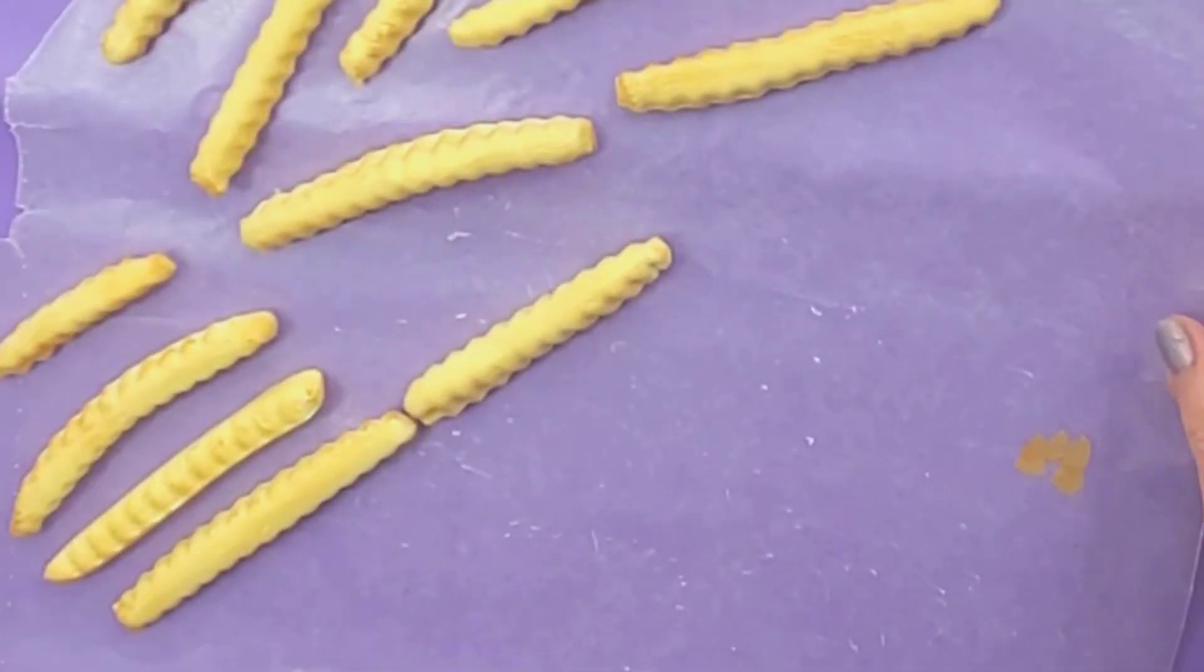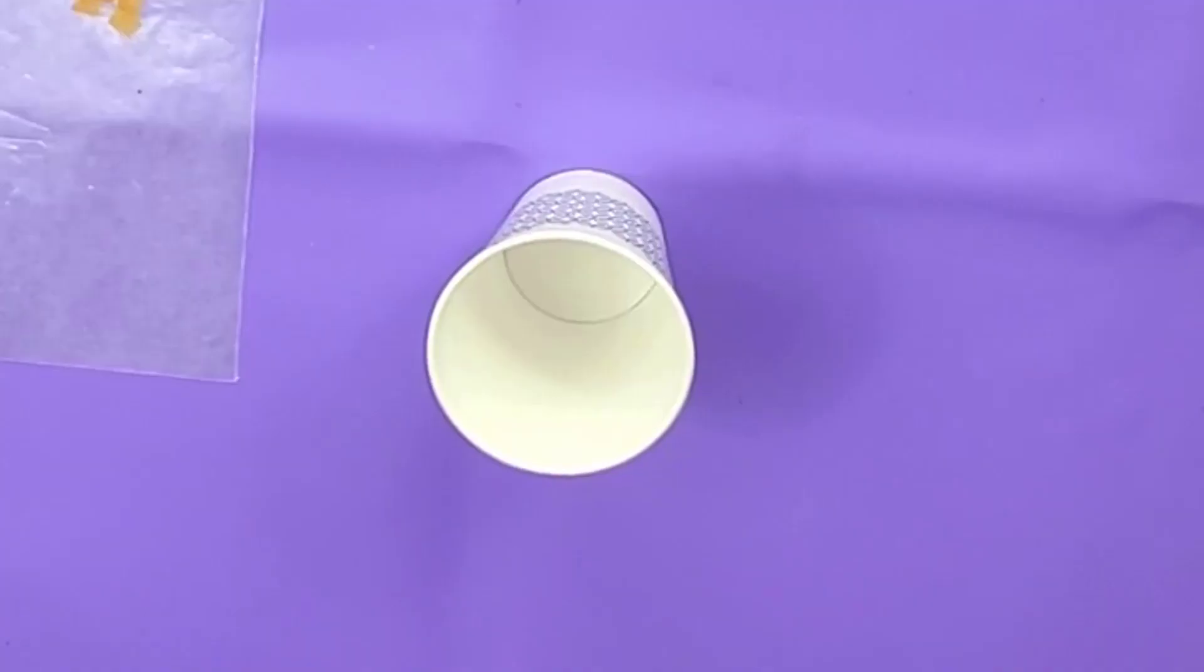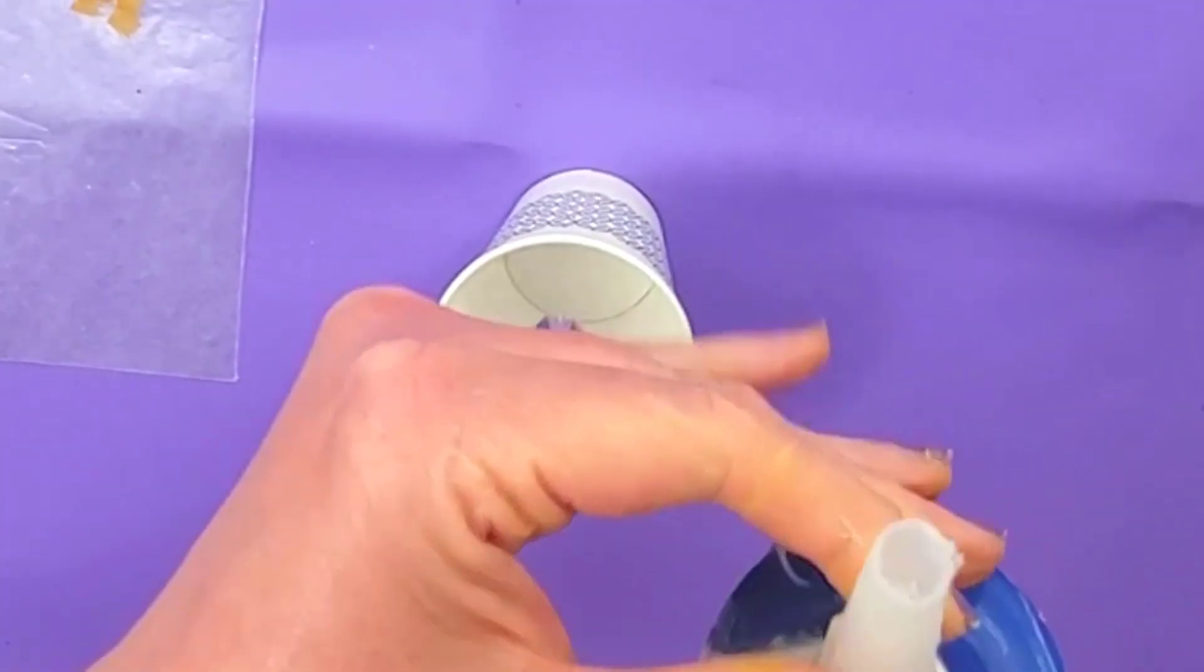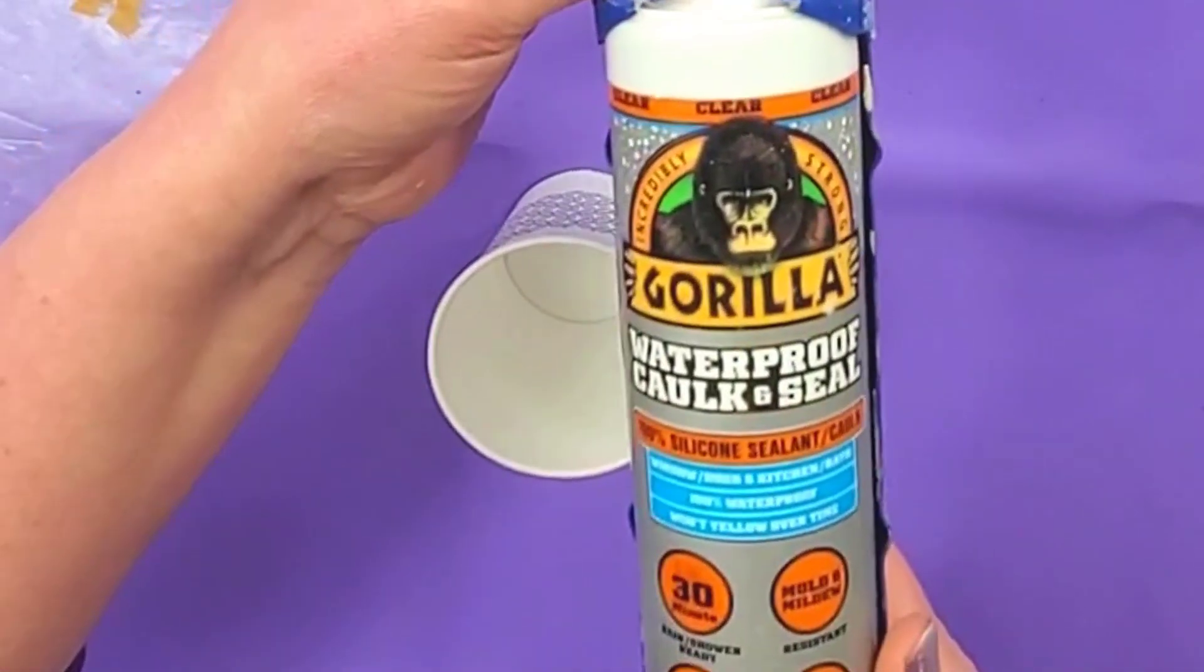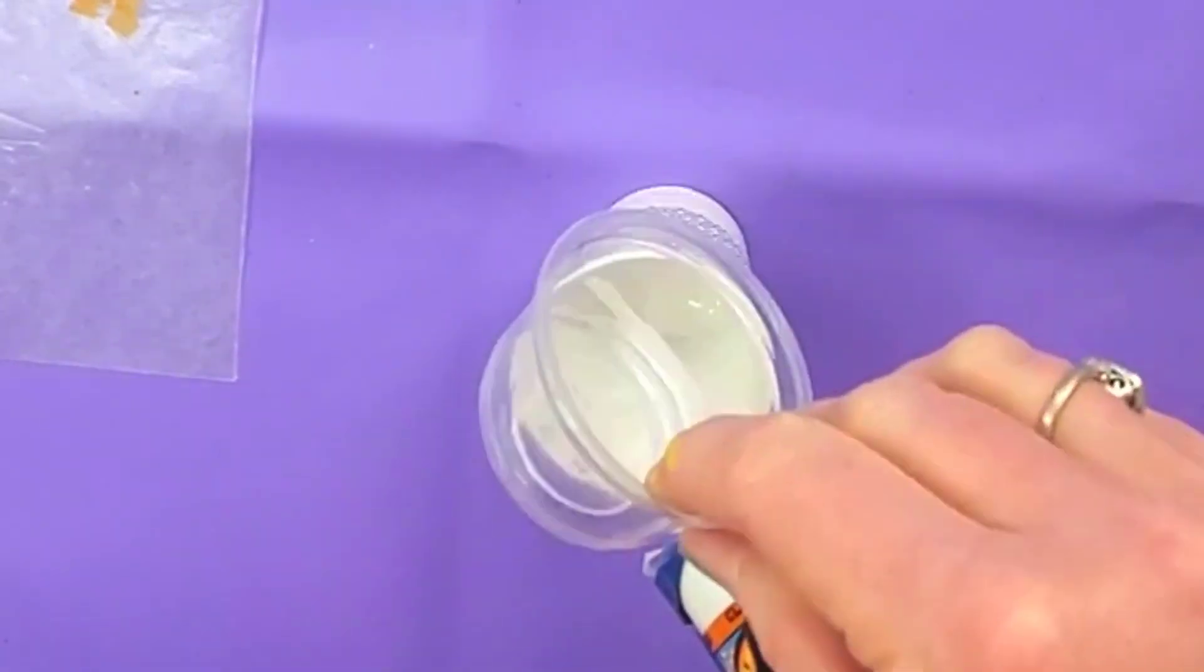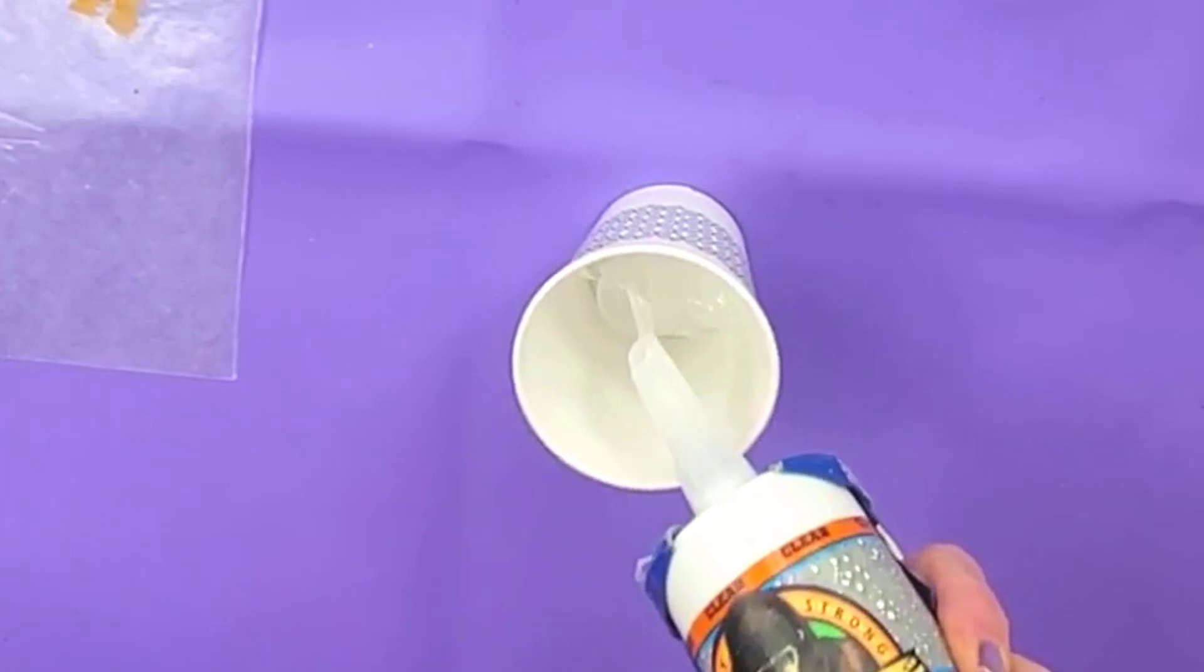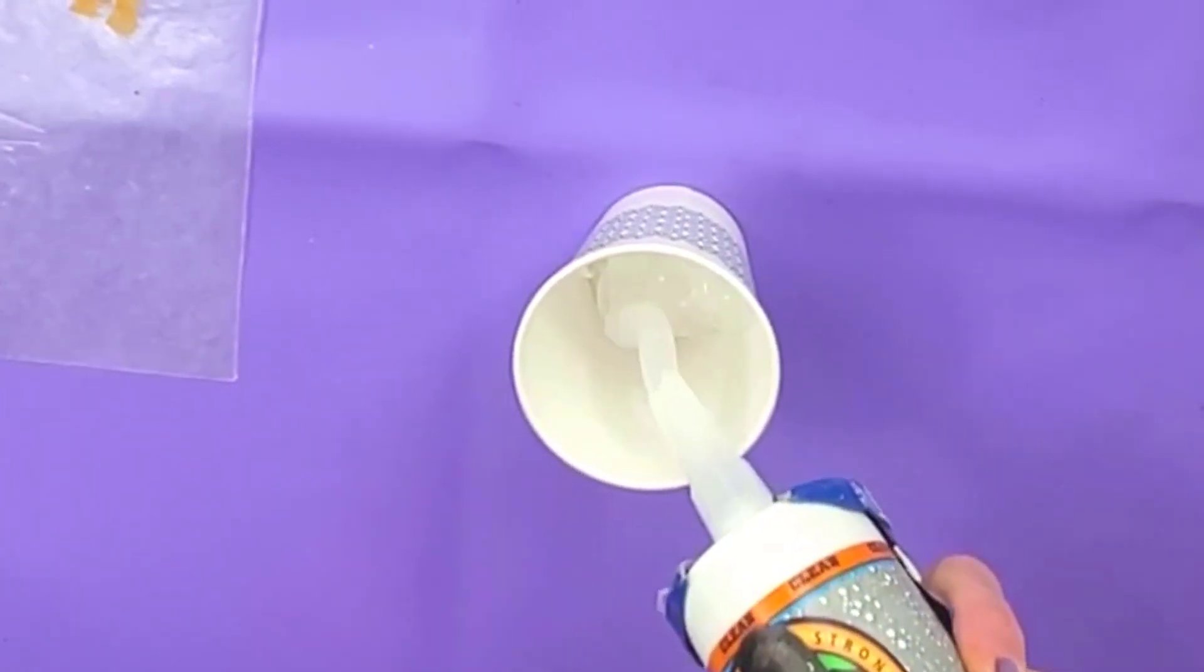I got all my fries shaded, so I'm going to make my ketchup now. For the ketchup I'm using 100% silicone—this is clear. I'm filling this little cup, so I want to make sure I get enough to fill it up however much I want.